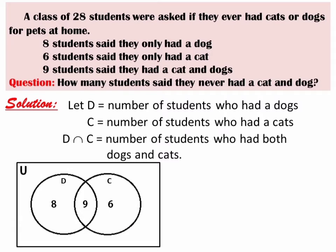Let's understand the problem carefully. It says there are 28 students asked. Now check your Venn diagram — there are only 23 students accounted for, but the data says 28. So there are 5 missing students. We will write 5 inside the rectangle but outside the circles to complete the universal set of 28. The answer to the question — how many students never had a cat or dog — is 5 students.